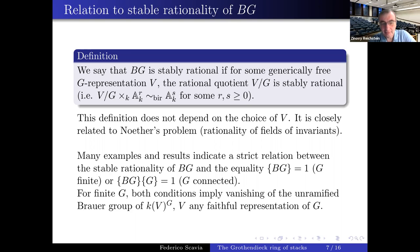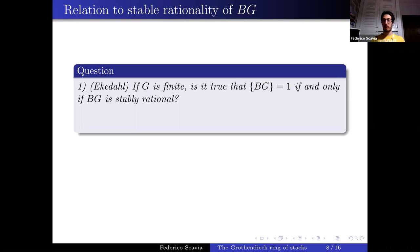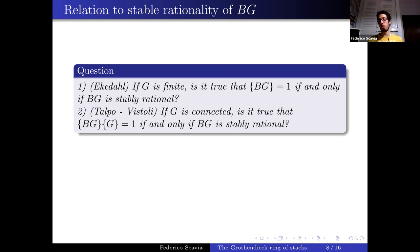The first question, posed by Ekedahl: when G is finite, is it true that the class of BG equals 1 if and only if BG is stably rational? The second question, posed by Talpo and Vistoli: when G is connected, is it true that [BG] · [G] = 1 if and only if BG is stably rational?